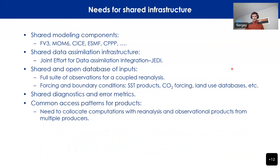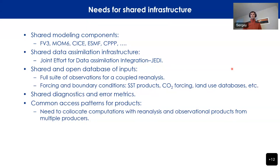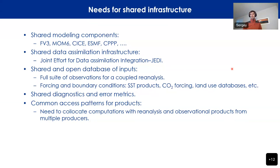To bring this vision forward, shared infrastructure in the United States is needed. There is already a lot of shared modeling components happening — such as the FV3 dynamical core for the atmosphere, MOM6 for ocean, CICE for sea ice, ESMF coupler, and atmospheric physics drivers. We are converging on shared data assimilation infrastructure such as JEDI. However, what we are missing is a shared and open database of inputs: full suite of observations for coupled reanalysis, forcing and boundary conditions such as SST products, CO2 fluxes, land use databases, shared diagnostics and error metrics, and common access patterns for products to help co-locate products and compute.